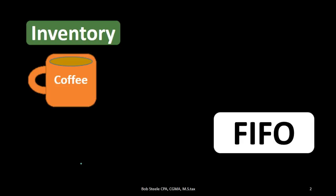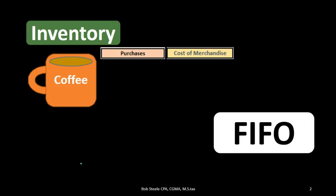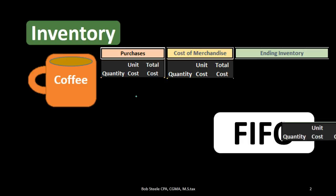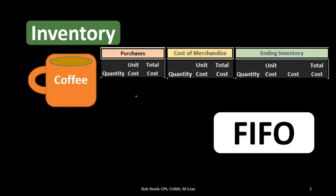To set up this problem under any cost flow assumption, I highly recommend putting together a worksheet with headers for purchases columns, cost of merchandise columns, and ending inventory. Set this up whether by hand, on a computer, or in Excel, because it answers all the types of questions that come up with an inventory cost flow assumption. Within those sections you'll have quantity, unit cost, and total cost. For ending inventory there will be two cost columns because there are going to be different layers — one for cost per layer and one for total layer cost.